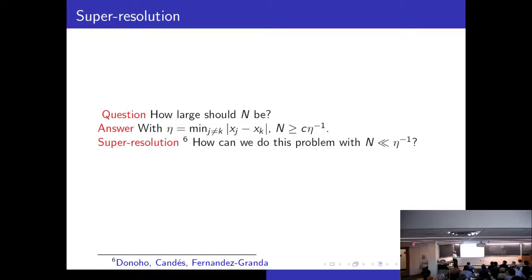So super-resolution means the question is how many pieces of information do you need here? And then the general wisdom is that if you look at the minimal separation here, then the number n should be greater than some constant times the reciprocal of the minimal separation. So then David Donoho and Candes and Fernandez-Granda, three generations of mathematicians asked, can we do this problem when the number of information we have is much less than this reciprocal of minimal separation? So that's called a super-resolution problem.